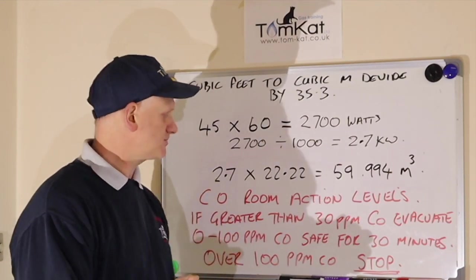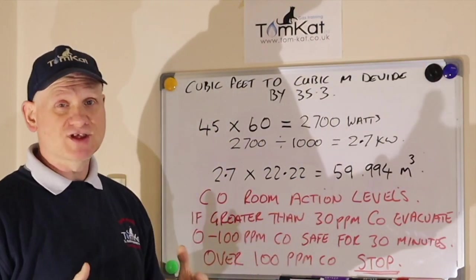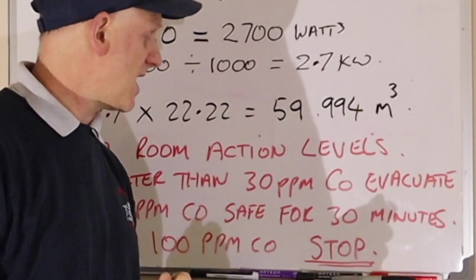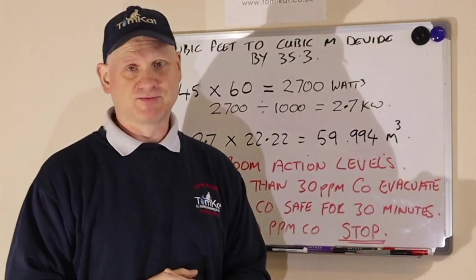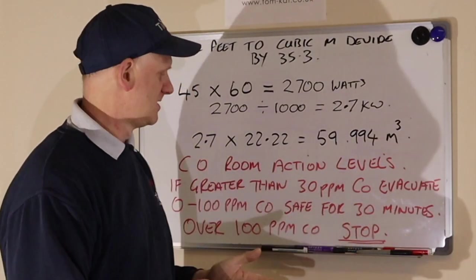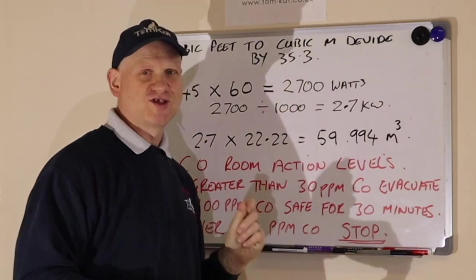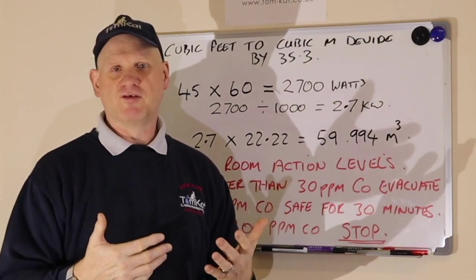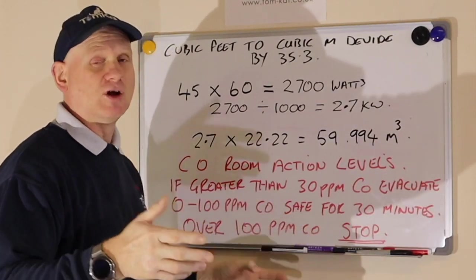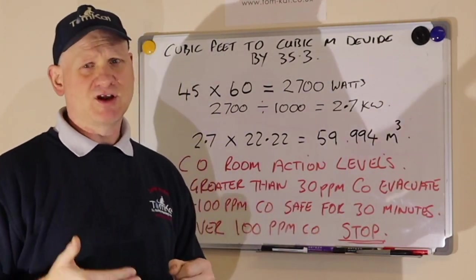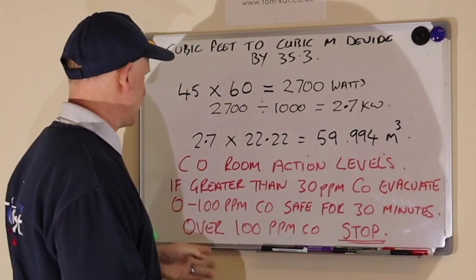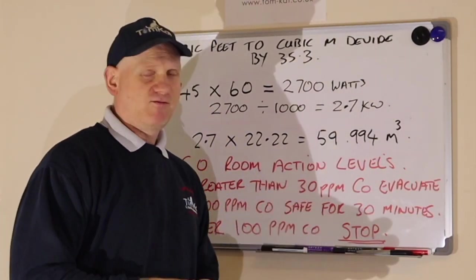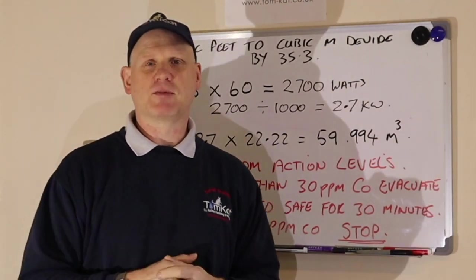CO room action levels are very important. If you get greater than 30 ppm CO you need to evacuate the room in any test — except cookers, which we'll look at next. Up to 100 ppm it's said to be safe for an engineer to remain for 30 minutes while testing. If it's over 100 ppm, stop the test, evacuate, and ventilate. The 30 ppm threshold applies to every appliance except cookers.